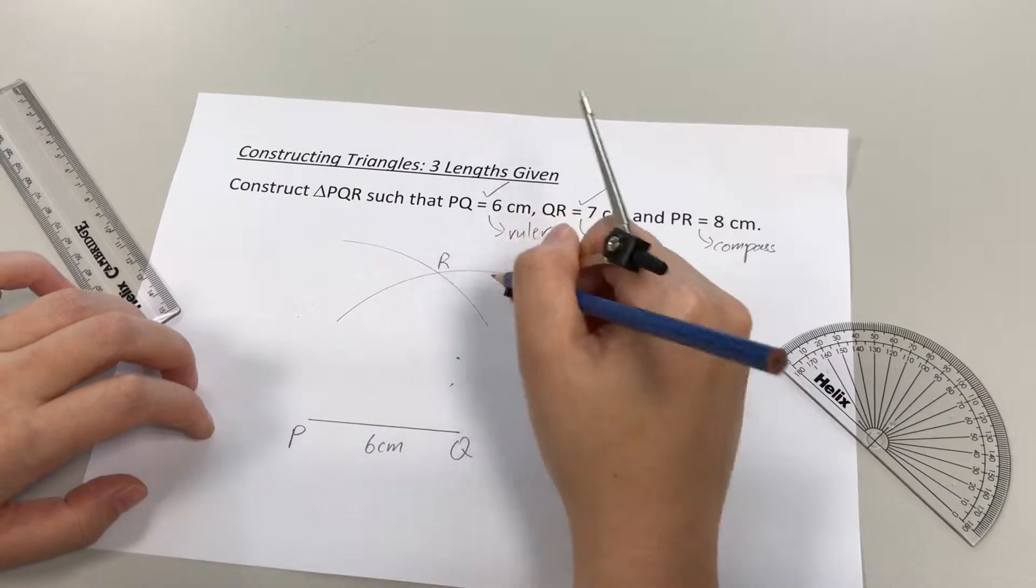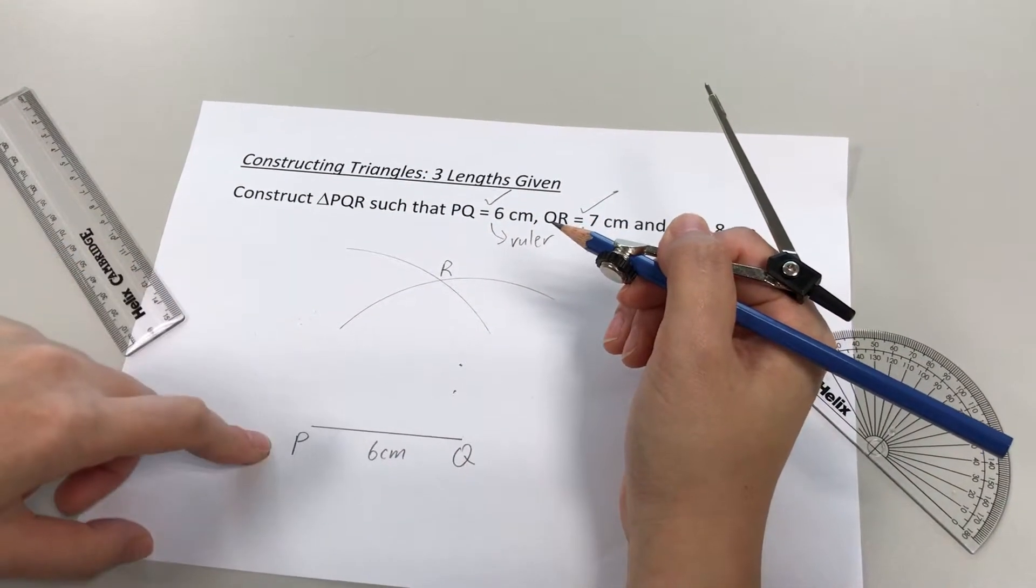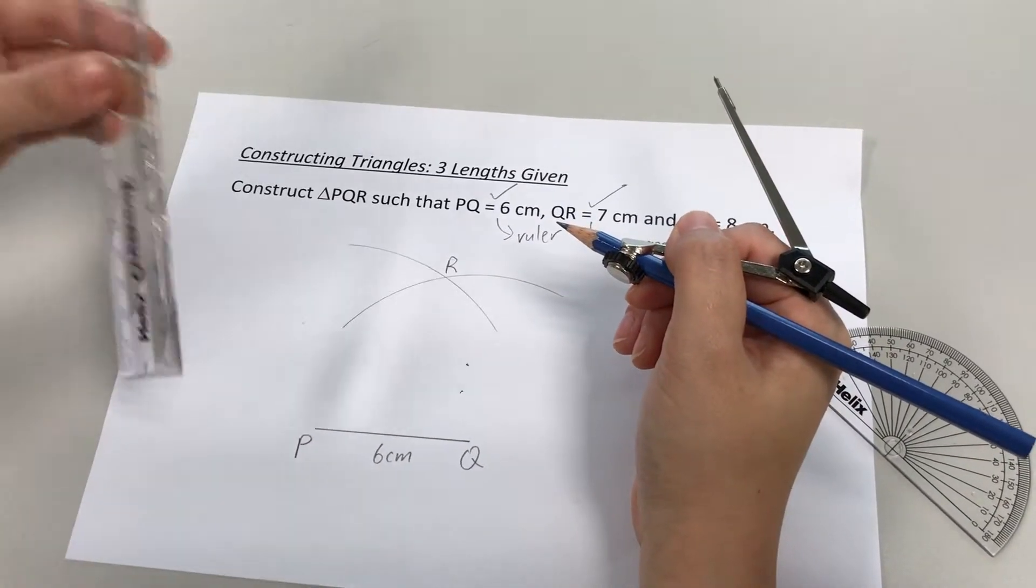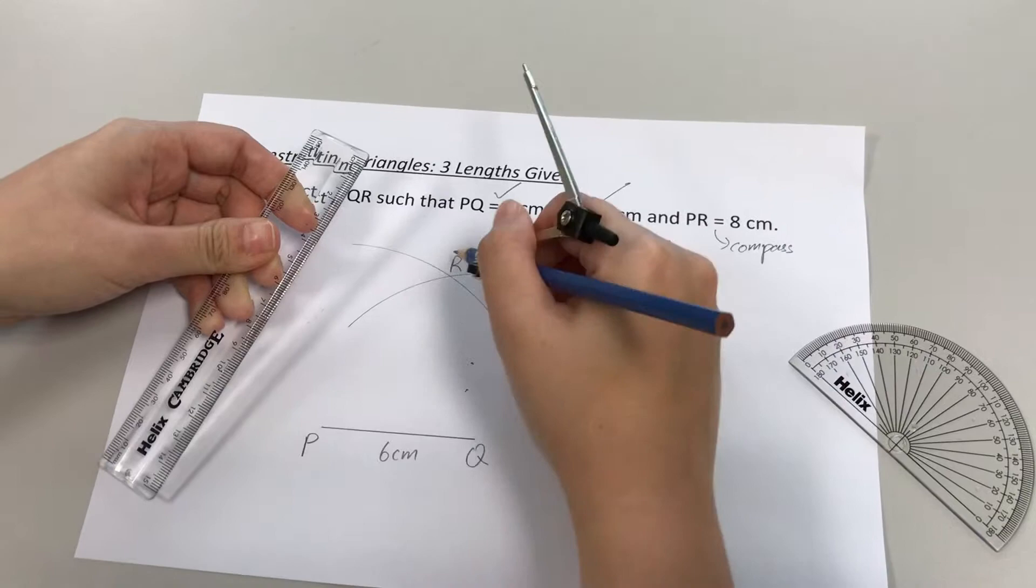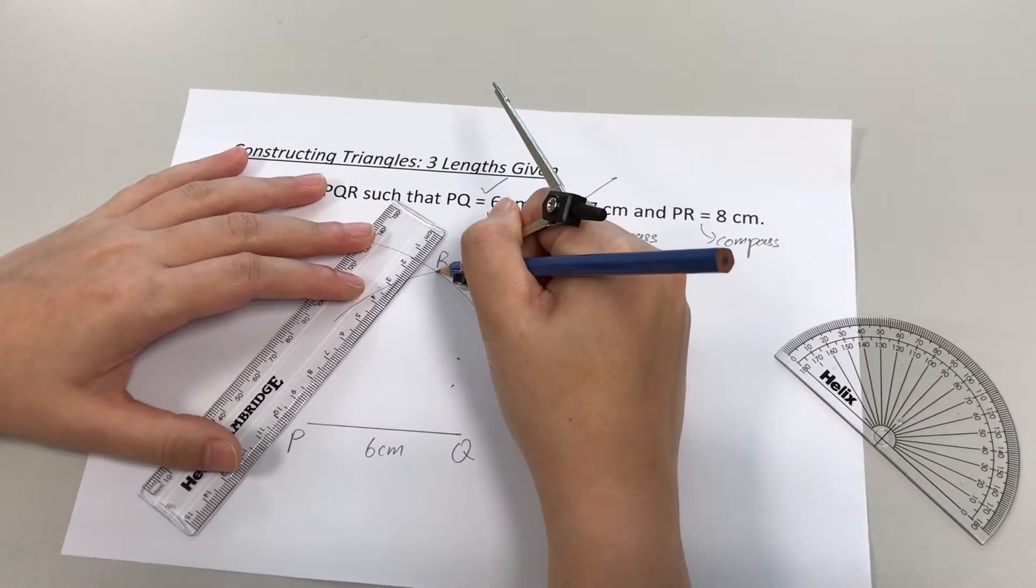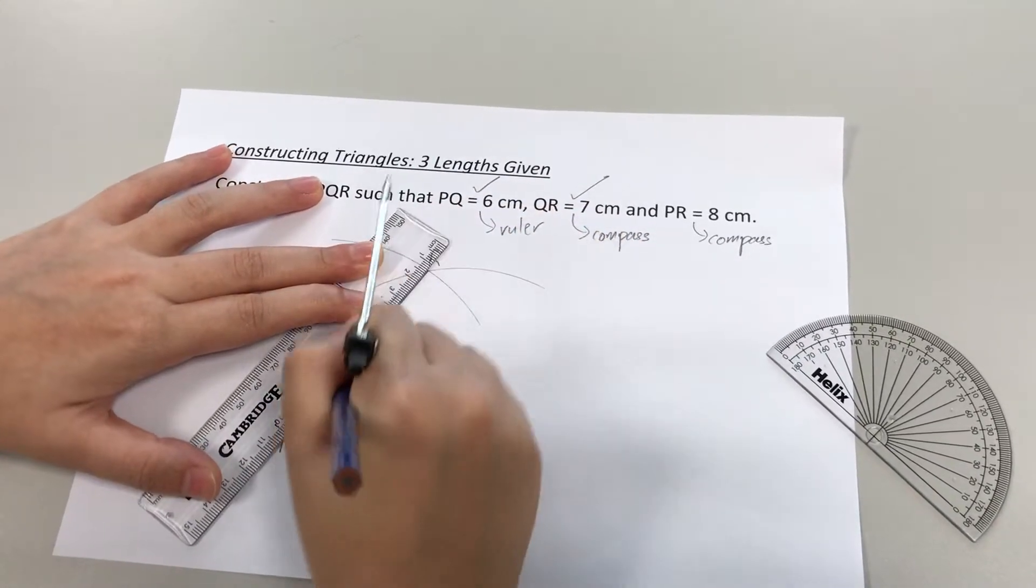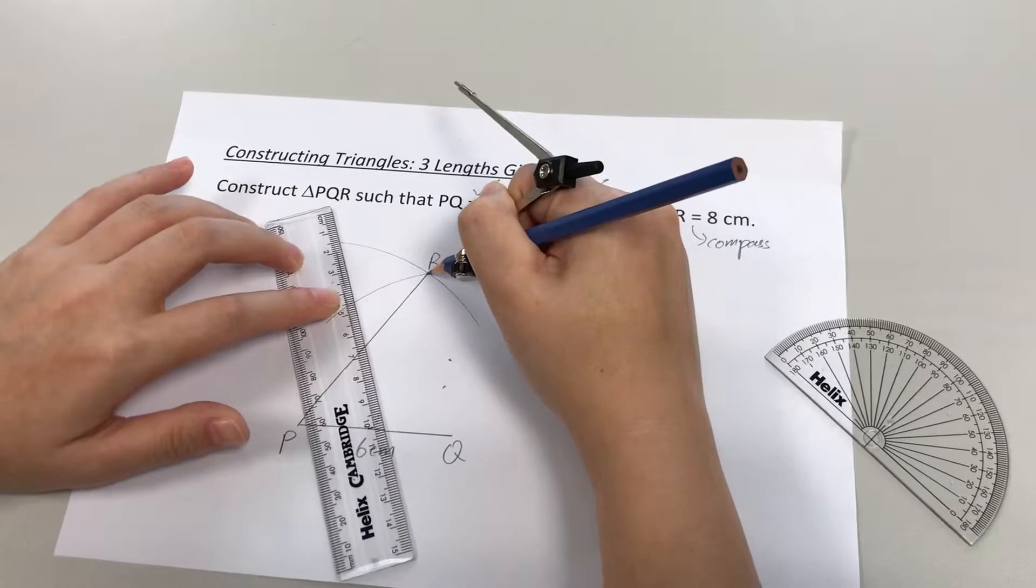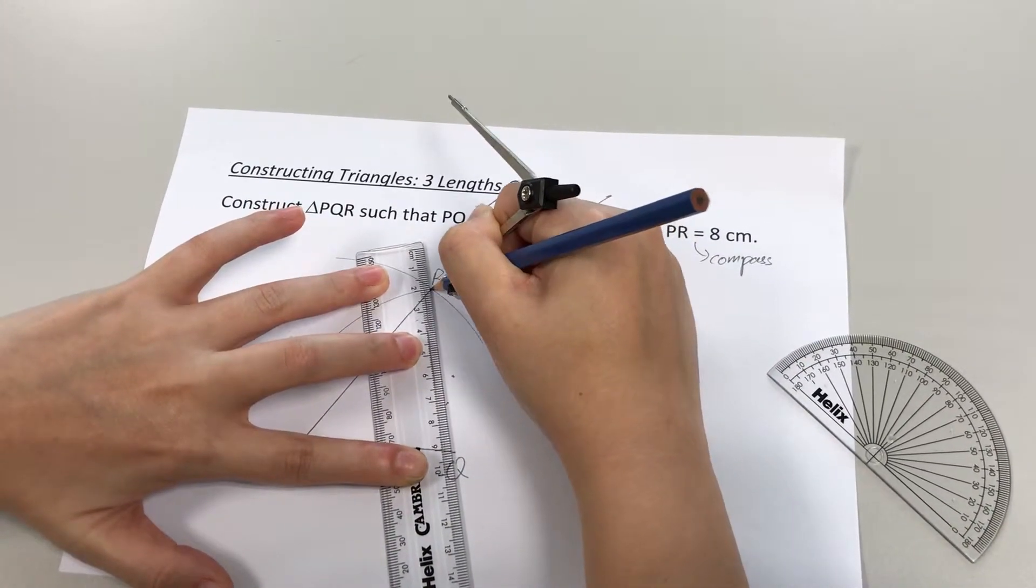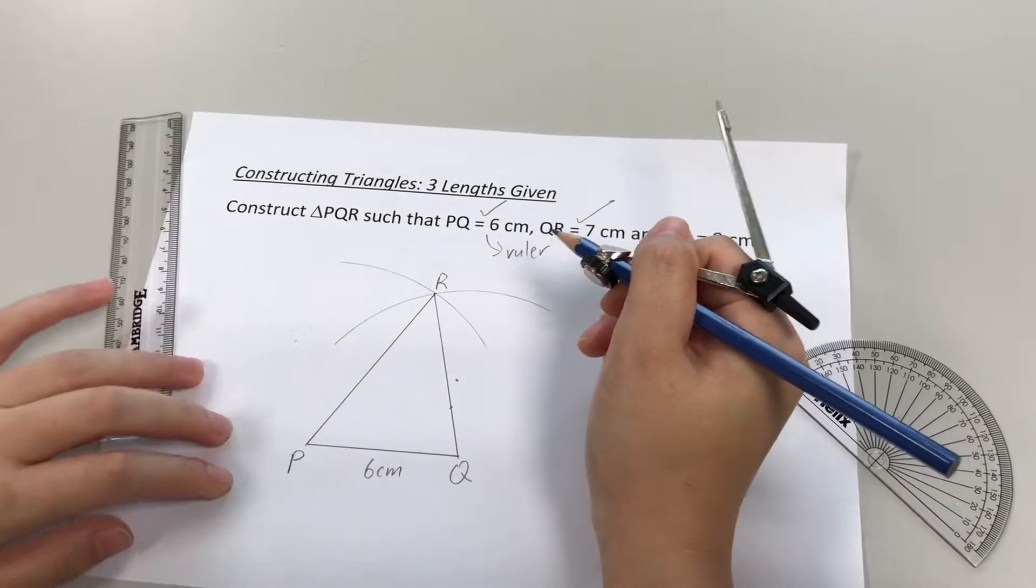Okay, so after drawing our two curves, we will have located point R. And obviously, this doesn't look like a triangle yet. So, we have one last step to do, which is to take your ruler, join the three points together such that you have a complete triangle. All right, so this is point R. I'm going to join R to P. Likewise, point R to point Q. All right, so now we have the triangle.